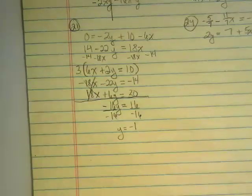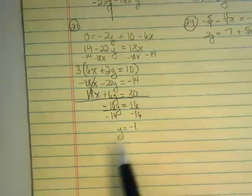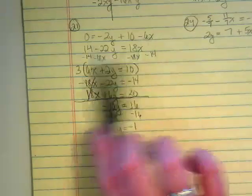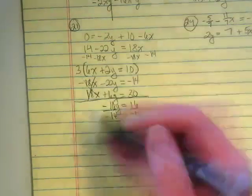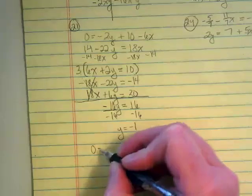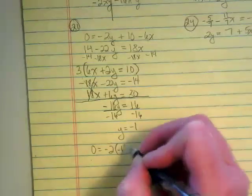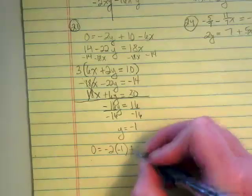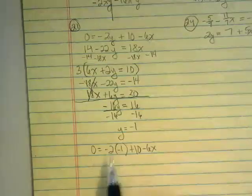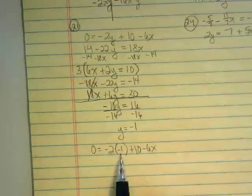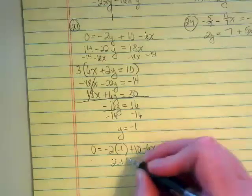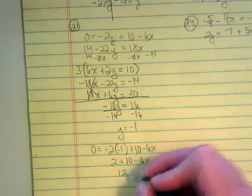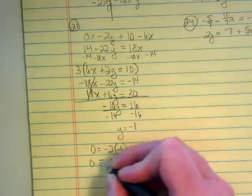Now how do I get the x? I'm going to go back to one of the first equations and I'm going to plug it in. I think I'm going to take that really messy looking first equation. 0 equals negative 2 times negative 1, because that's the y, plus 10 minus 6x. Negative 2 times negative 1 is positive 2, plus 10 minus 6x. I get 12 minus 6x.